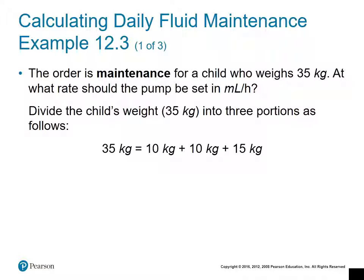Here's our calculation. The order is maintenance fluids — note this is different from replacement fluids, which account for fluid lost through diarrhea, vomiting, or fever. The child weighs 35 kilograms. At what rate should the pump be set in milliliters per hour? We divide the child's weight into three portions based on the tiered system: the first 10 kg, the next 10 kg, and the remaining weight above 20 kg.